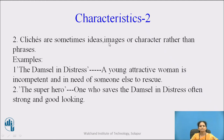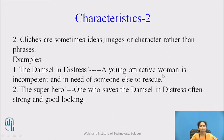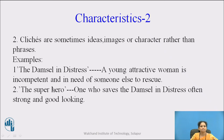The next characteristic: glitches are sometimes ideas, images or characters, rather than phrases. Examples: the first one is 'the damsel in distress,' meaning a young attractive woman who is incompetent and in need of someone else to rescue. The second example is 'the superhero,' meaning one who saves the damsel in distress, often strong and good looking. So sometimes glitches are ideas, images, or may be in the form of a character.